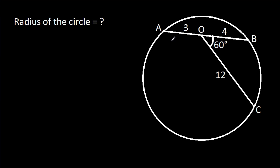In this video, we have been given that AO is 3, BO is 4, CO is 12, and angle BOC is 60 degrees. Then we have to find the radius of the circle.